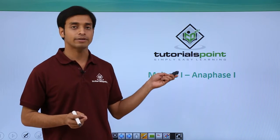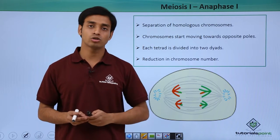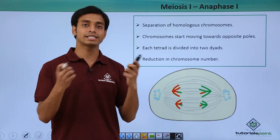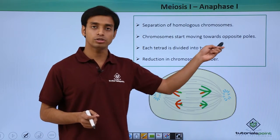is followed by the phase known as anaphase I. In anaphase I the separation of the homologous chromosomes happens. As you can see over here, the homologous chromosomes start getting separated. The chromosomes start moving towards the opposite poles as you can see in this picture.